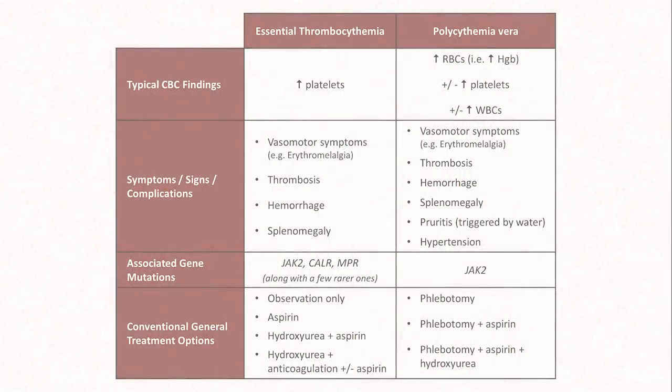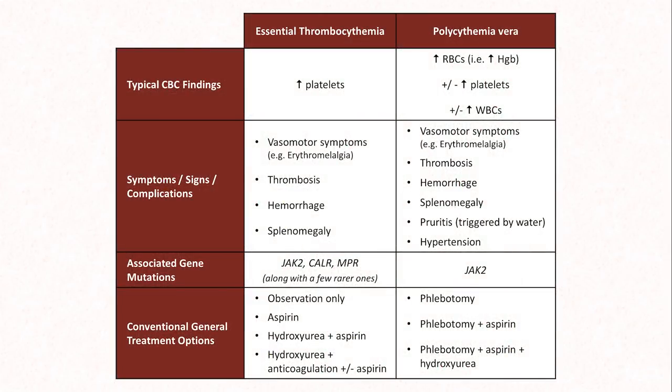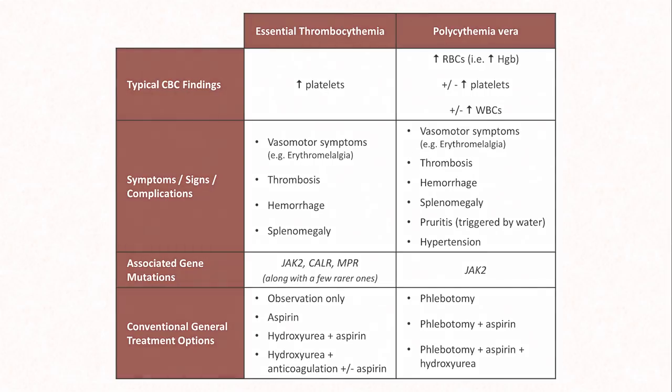ET and PV sound similar in presentation, associated gene mutations, and general treatment options. A summary slide is provided to compare and contrast them — you can pause the video to read it or take a screenshot for later review. This concludes the discussion on thrombocytosis. The next video will cover qualitative platelet disorders, including von Willebrand disease.